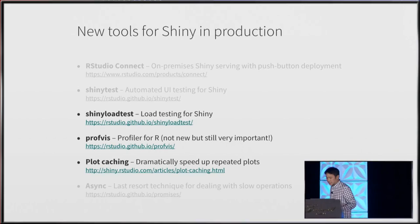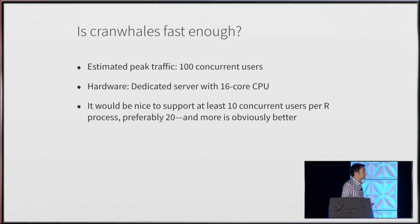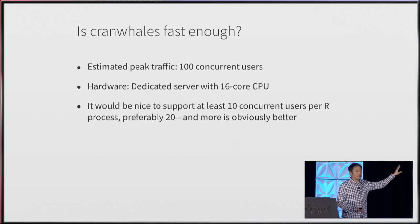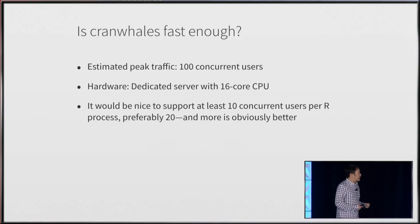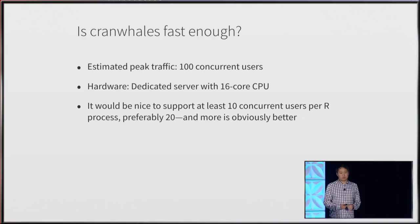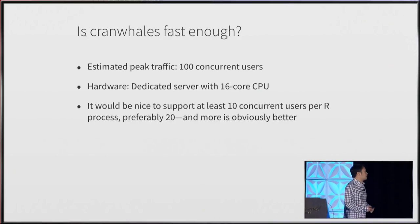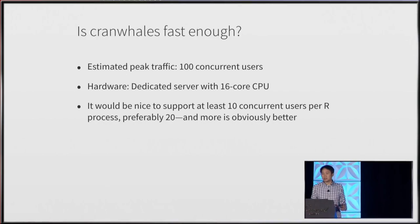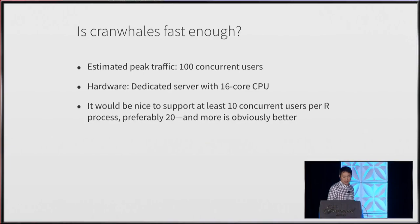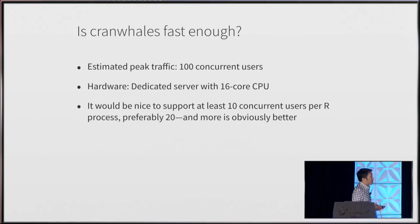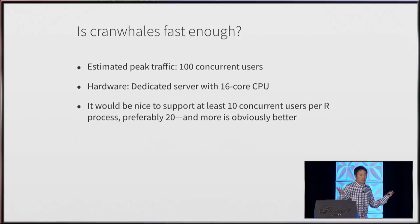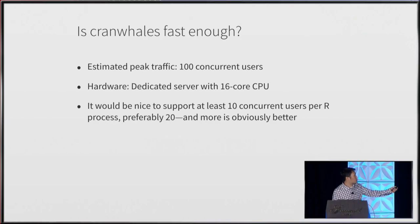We'll look at these three tools through the lens of Cranwhales. Cranwhales was pretty slow, so let's set a target. Let's say we want to support 100 concurrent users on one dedicated server with a 16-core CPU. It'd be great if each process could support between 10 and 20 concurrent users. Let's start with 20 as a test and see what happens.